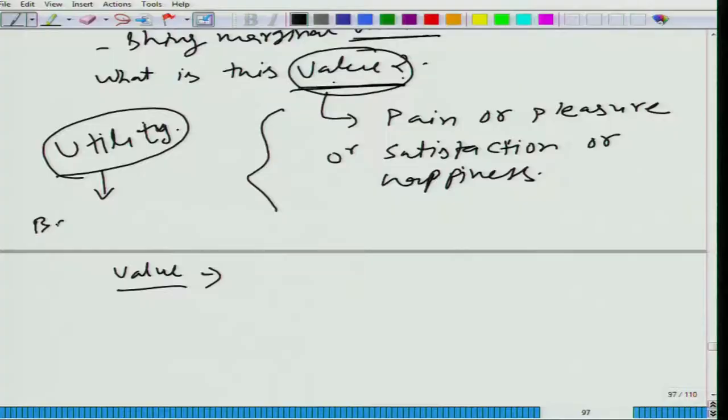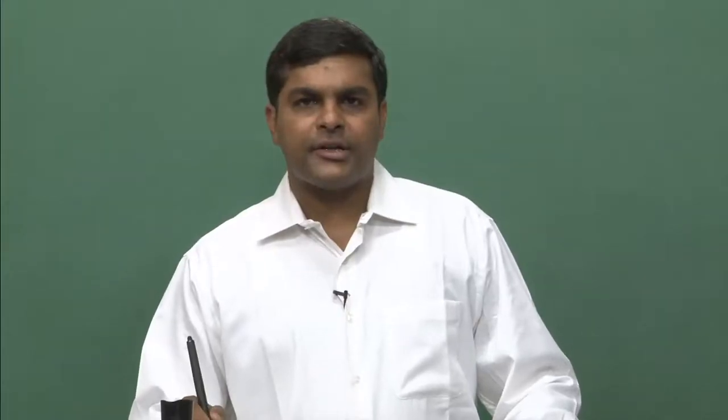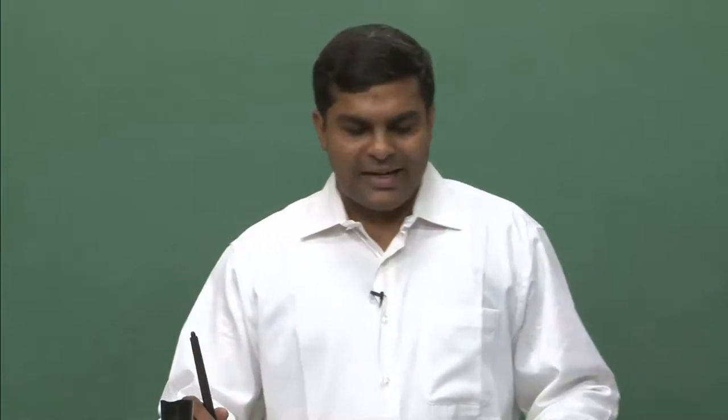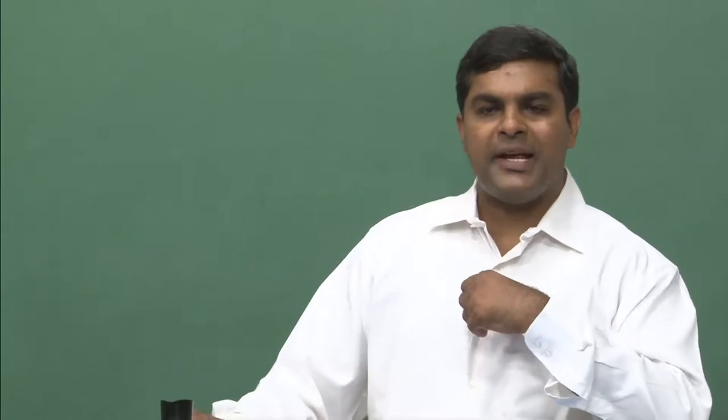And that is what utility term. Let me talk about Bentham, Jeremy Bentham and John Stuart Mill, J S Mill. They were proponents, they gave this utilitarian concept, they talked about utility. When they talked about it, what they thought that of course, happiness can be measured, pleasure can be measured, pain can be measured.